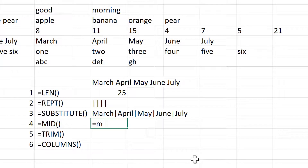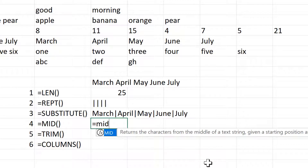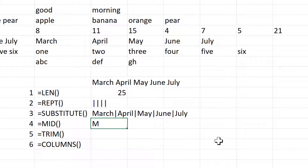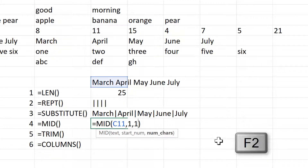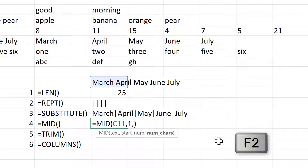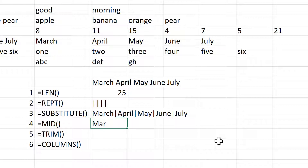Then the MID formula will let you take a piece of text from the middle of a text string. So if I select this text here and say the start number is one and the number of characters is one, that will get me the letter M because I'm looking at just the first letter. Then if I change the number of characters to two, I will get both the M and the A. And then if I change this to three, I get M, A, and R.